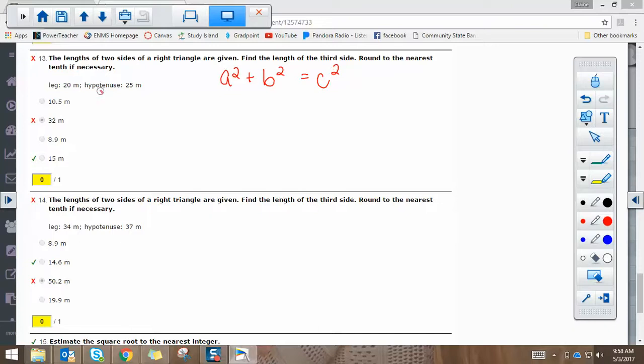What you need to remember is that the hypotenuse is always c. And you can see that in both problems you're given the hypotenuse. That number has to go over here for c. When they give you a leg measurement, it doesn't matter if you call it a or b. I usually plug in for a just because it's first. So if I plug the 20 in for a, that's 20 squared plus b squared equals 25 squared.